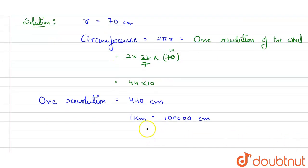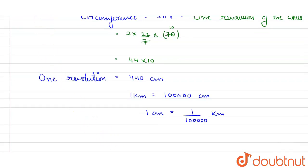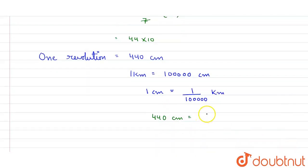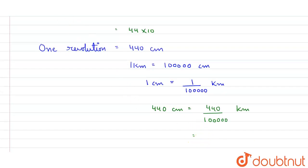We have to convert 440 centimeter, which equals 1 upon 1 lakh kilometers. Because total road distance is in kilometers, we have to convert this. Its value will be 440 divided by 1 lakh kilometer. You can cancel the zeros, so it means 0.0044 kilometer.